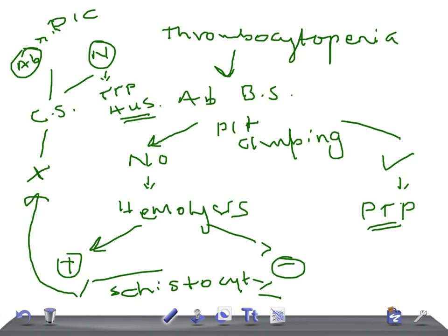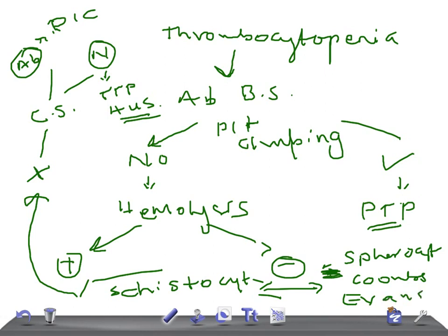If schistocytes are absent, then look for other signs like spherocytes, HAM test, and Coombs test. If spherocytes are present and Coombs test is positive, then think of Evans syndrome. If HAM test is positive, then think of PNH — paroxysmal nocturnal hemoglobinuria.